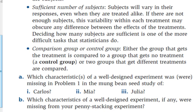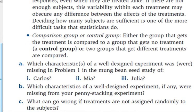So the three flaws we already identified: one was missing random assignment, one was missing the control group, and one was missing a sufficient number. What can go wrong if treatments are not assigned randomly? Bias — a lot of bias. Whether it's bias on your part or wherever it comes from, you're going to run into issues with bias and that's going to throw your results off.